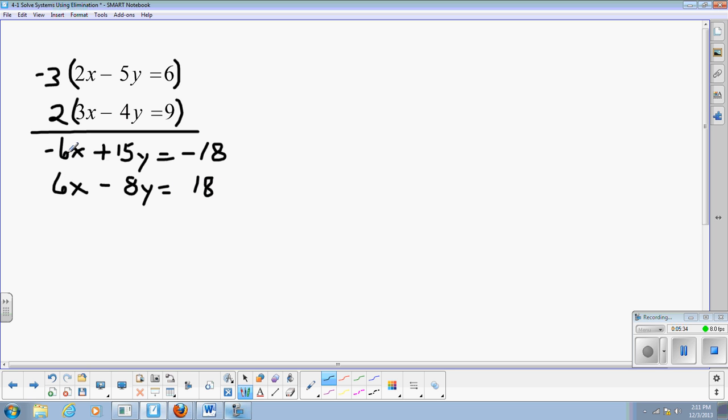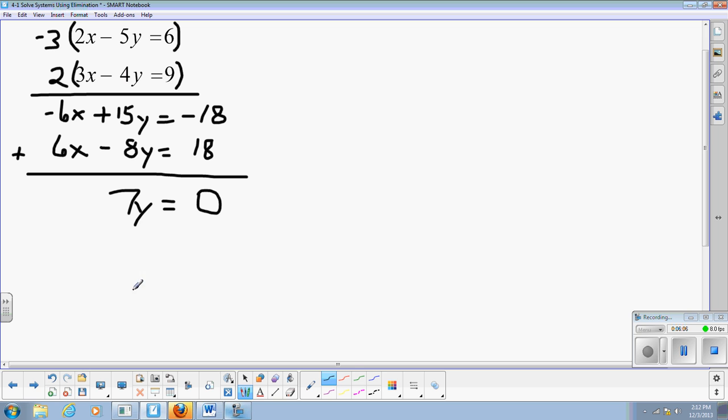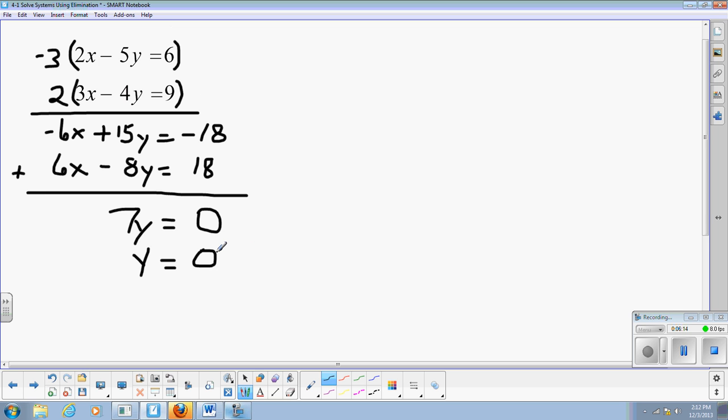So I have a negative 6x and a positive 6x. Since I've created opposites, we will add the two equations together. 6x, negative 6x plus 6x, 0. 15 plus negative 8, or like 15 minus 8, 7y. Equals negative 18 plus 18. You might say that's opposites. Is that going to eliminate? No. Negative 18 plus 18 is 0. And I have to write the 0 there. It's the only thing on that side of the equation. So I have to write the 0 to hold that place. Divide both sides by 7. And y equals 0. 0 divided by 7 is 0.